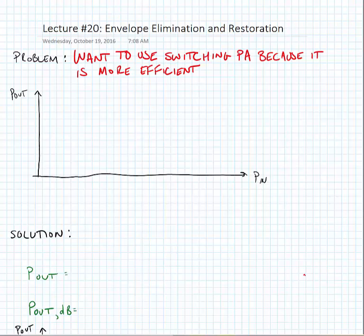The P out versus P in characteristic, we typically with a switching power amplifier see a characteristic where the output is off until some point when the input crosses a threshold that allows it to switch, and then it turns on very hard. So there's no sensitivity of output power with respect to input power. In other words, it's not linear.